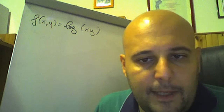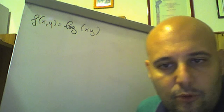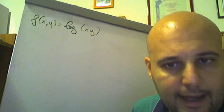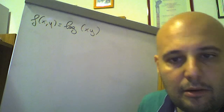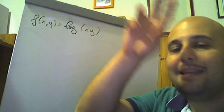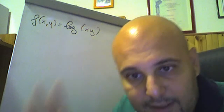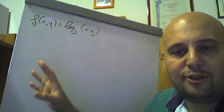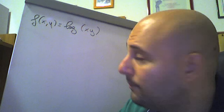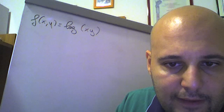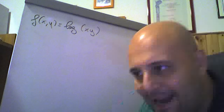Proseguiamo derivando parzialmente, sia la prima che la seconda volta, questa funzione delle due variabili f(x,y) = log(xy), dove log, attenzione, è inteso come logaritmo naturale, neperiano. Qualcuno fa il fenomeno correggendo e dicendo che log si intende base 10 e ln base e. Ragazzi, è inutile che fate i fenomeni: la maggior parte dei libri universitari usa log come logaritmo naturale. Non è che per forza bisogna indicarlo come ln. In questo esercizio log(xy) è in base naturale, non fate i preziosi.